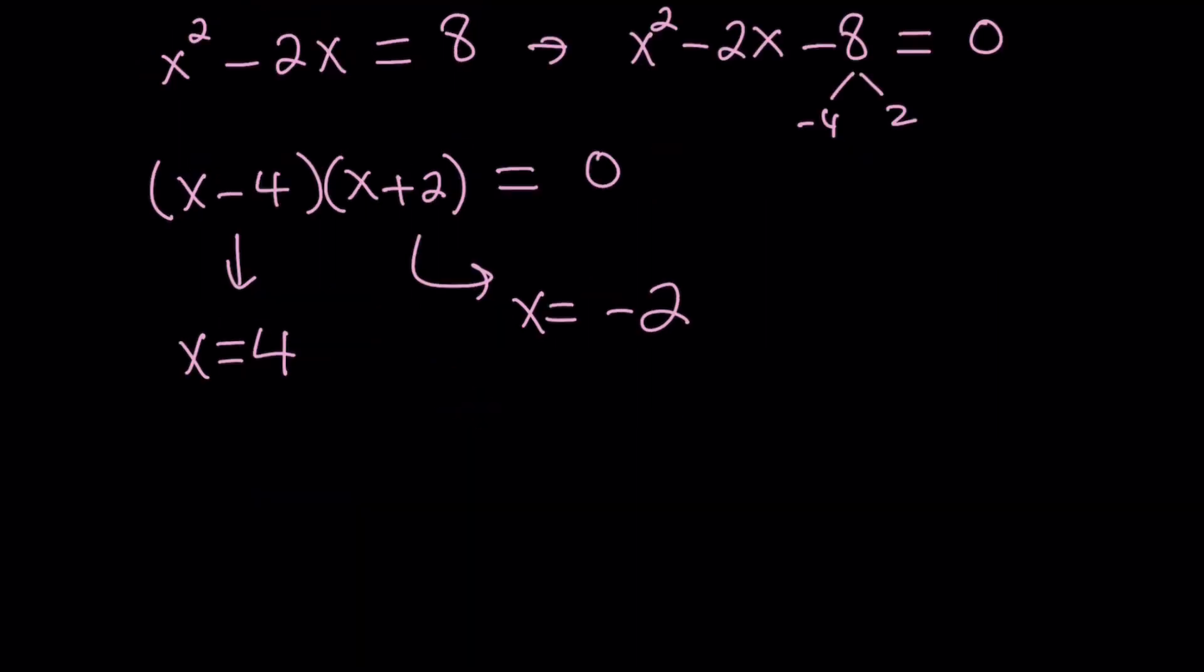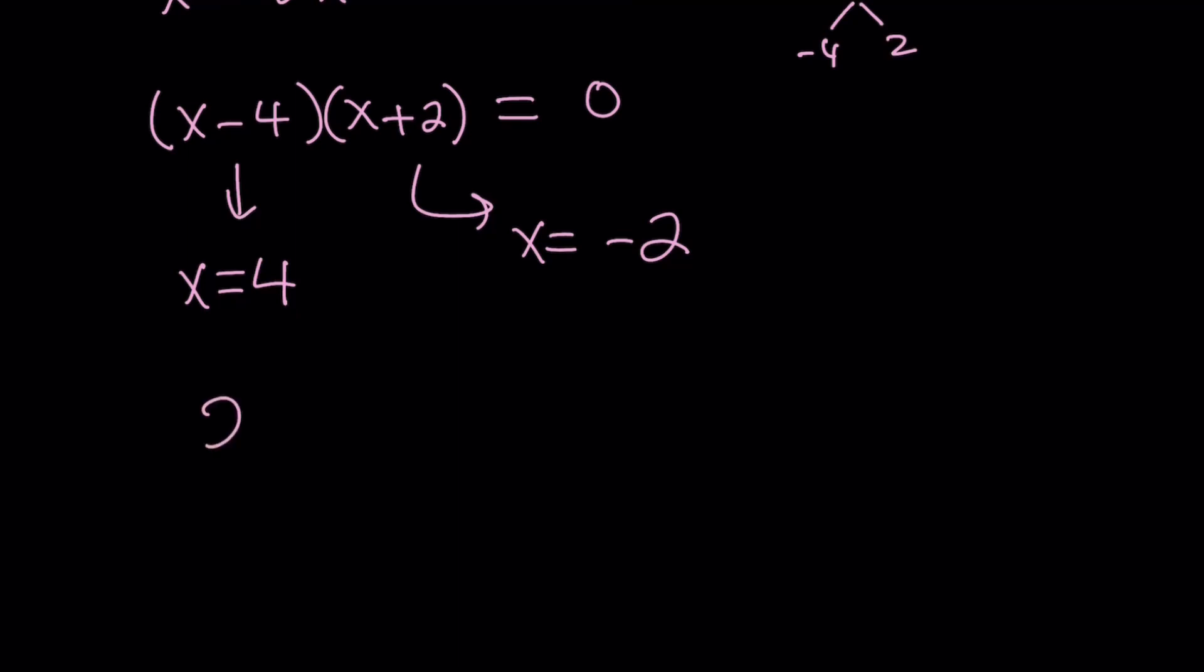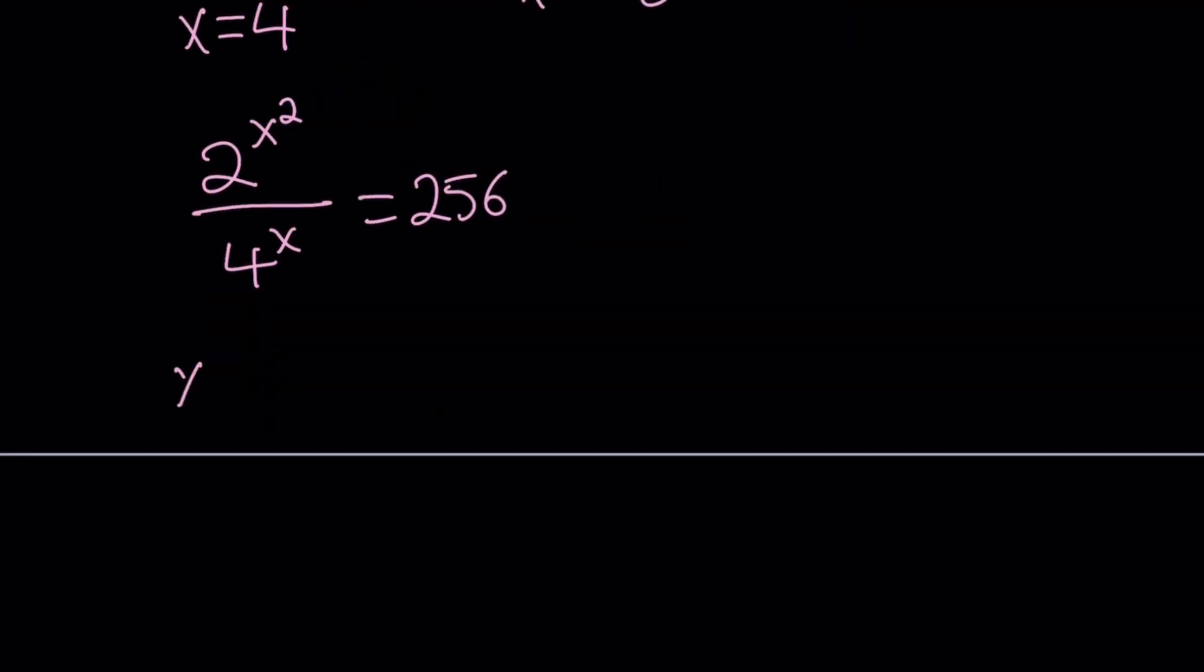Let's go ahead and check. The original equation is 2 to the power x squared divided by 4 to the power x equals 256. If we replace x with 4, we get 2 to the power 16 divided by 4 to the power 4, which is 2 to the power 16 divided by 2 to the 8th, and that is 2 to the 8th, and that is 256.